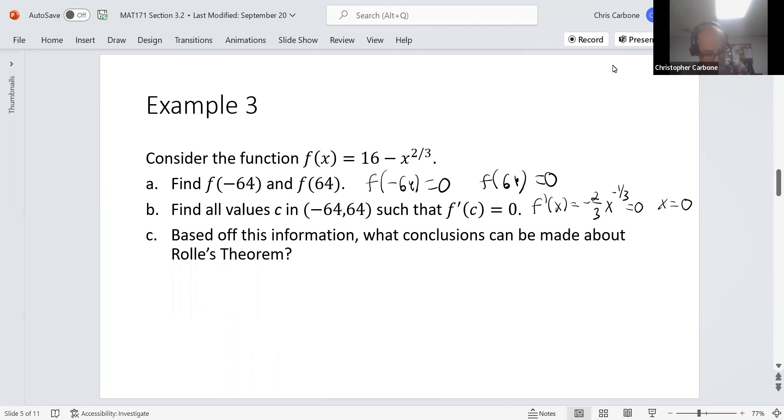But based on the fact that that's what that value would have to be, x is in the denominator. So it wouldn't exist at zero. So based off this information, what conclusions can be made about Rolle's theorem? That does not exist based on the derivative. And we also know that this function is not differentiable on the open interval negative sixty-four to positive sixty-four. So doesn't really tell us much about Rolle's theorem because one of the hypotheses is not met.